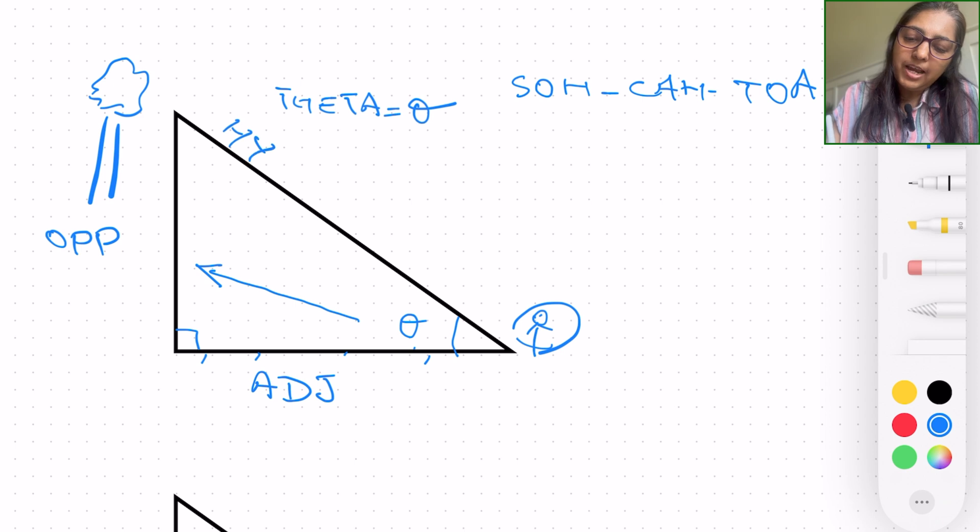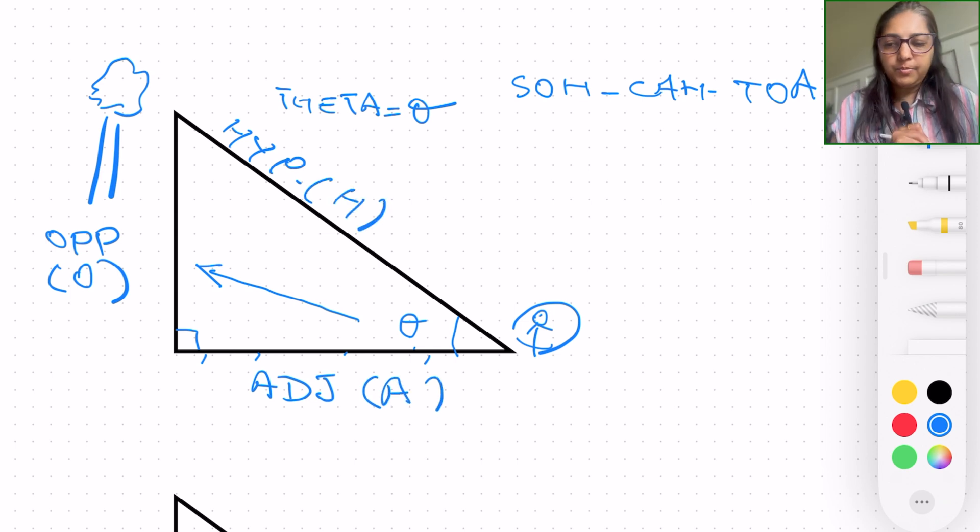And since it is a right angle triangle, we have a hypotenuse. Once again, I am utilizing short forms. And now you can see, we are writing the alphabets as well.